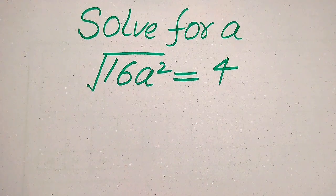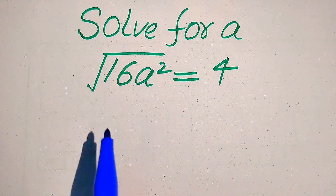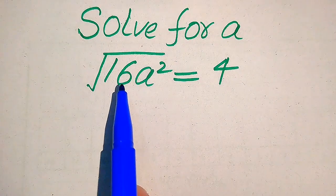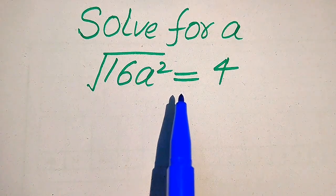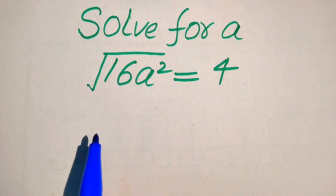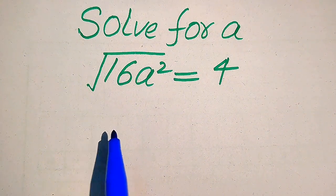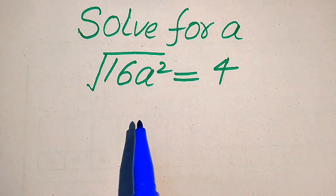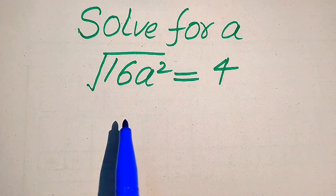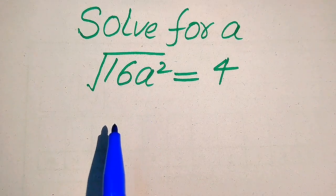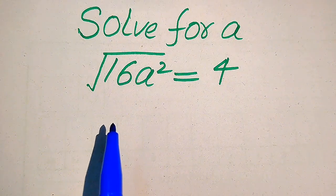Hello everyone. How to solve this problem for the values of a, if we have the square root of 16 times a squared equals 4. We will solve this problem for the values of a. First, we find all the roots of this equation, and at the last we determine which of the roots are solutions of this equation and which of the roots are extraneous roots.